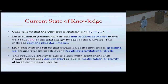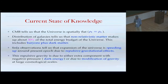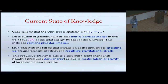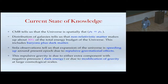The current state of knowledge: CMB tells us the universe is spatially flat, so the critical energy density equals the total energy density. Galaxy distributions tell us non-relativistic matter — dark matter plus baryonic matter — is roughly 30% of the total energy budget. Supernova observations from 1998 onwards tell us the universe is accelerating, and this needs some repulsive gravitational effect — either an extra component with negative pressure, which we call dark energy, or modification of Einstein's gravity at large cosmological scales. In this talk I mostly concentrate on the dark energy side.